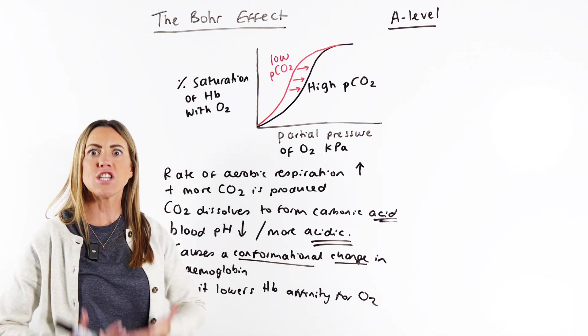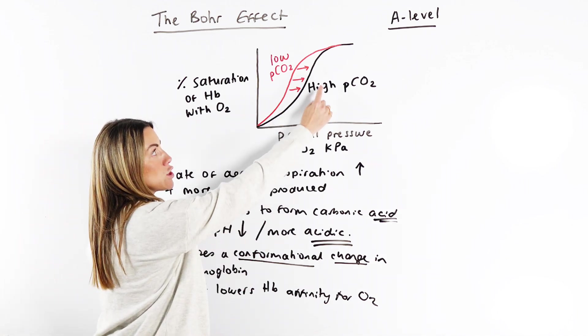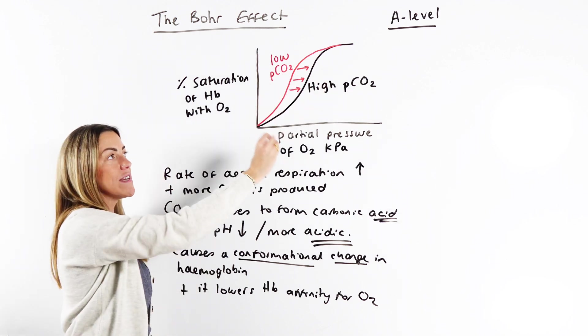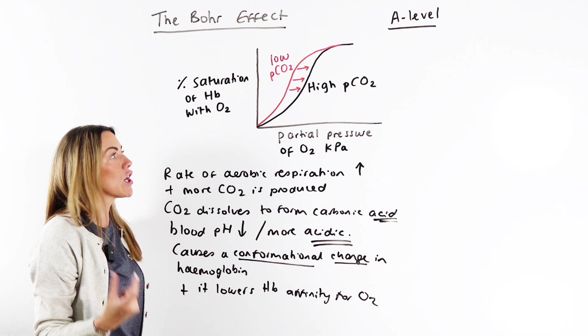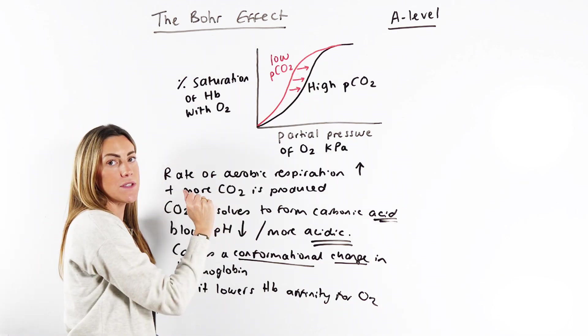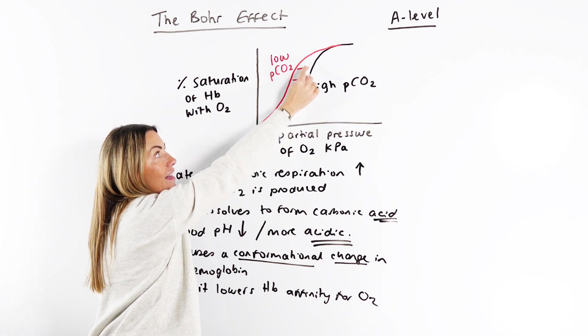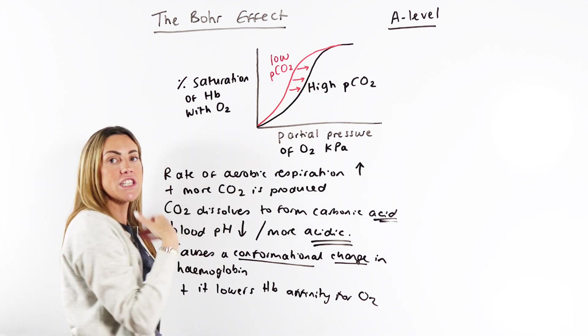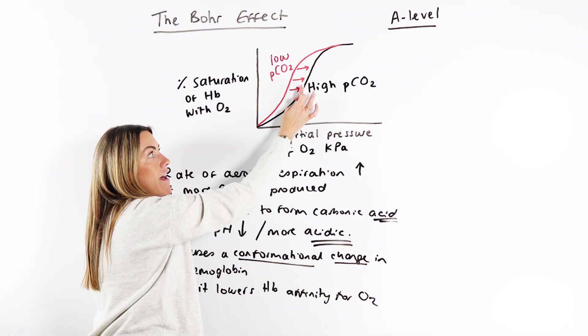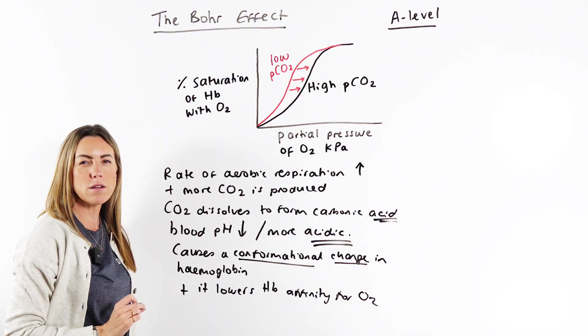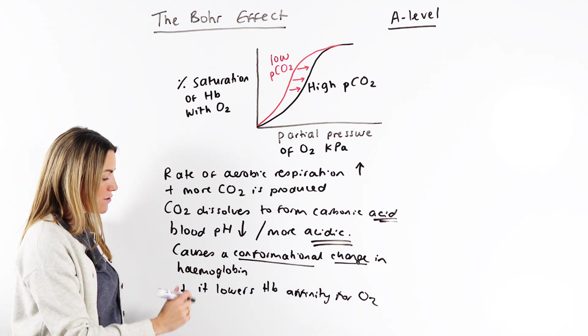Remember, because there's more respiration, more carbon dioxide moving into the blood. High CO2, we can see on this graph that the affinity that hemoglobin has for oxygen has been reduced. You can see this line is lower than this line, which is a reminder for you to say in your exam: hemoglobin's affinity for oxygen is reduced.